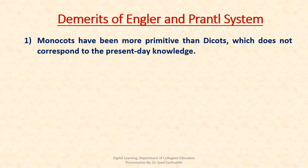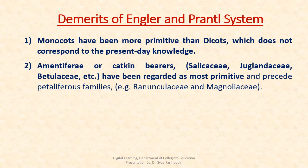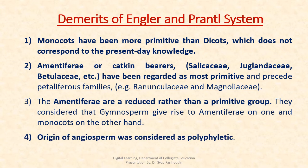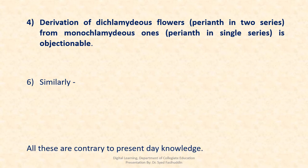Demerits of the Engler and Prantl system: Monocots have been placed as more primitive than Dicots, which does not correspond to present-day knowledge. The Amentiferae, commonly called the catkin-bearing group — that is, Salicaceae, Juglandaceae, and Betulaceae — have been regarded as most primitive and precede petaliferous families like Ranunculaceae and Magnoliaceae. The Amentiferae are a reduced rather than a primitive group. They consider that Gymnosperms give rise to Amentiferae on one hand and Monocots on the other. The origin of Angiosperms was considered as polyphyletic. Derivation of dichlamydeous flowers from monochlamydeous ones is objectionable.